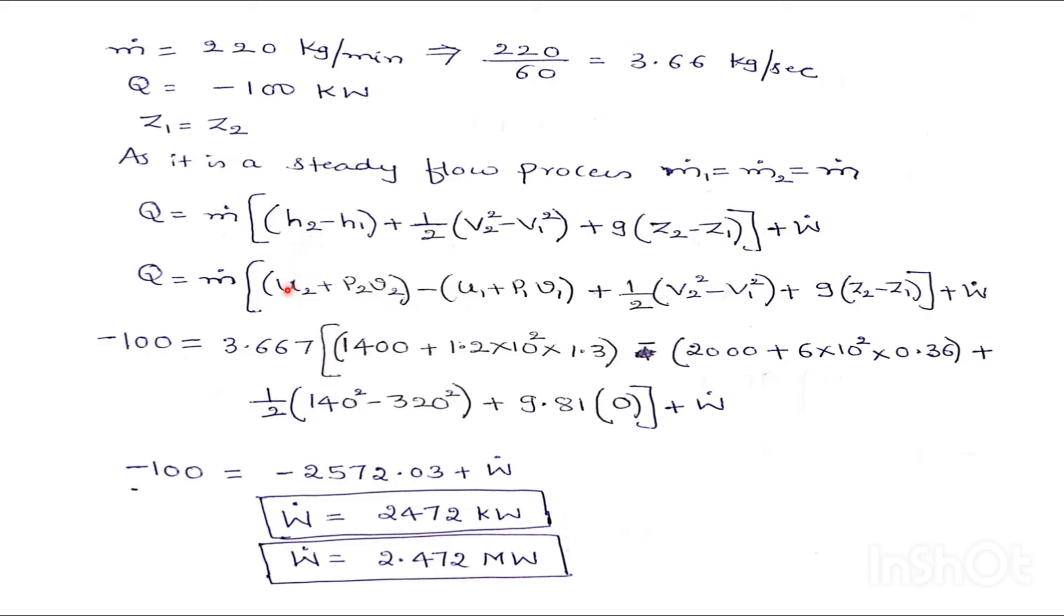So H2 is nothing but U2 plus P2V2 because we are not having enthalpy value. So I have converted this enthalpy in this form. U2 plus P2V2 minus H1 is nothing but U1 plus P1V1 plus this equation as it is. So this will be anyhow 0 plus W dot.